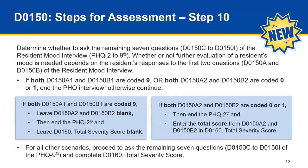A new step for assessment was added: Step 10. Step 10 states: determine whether to ask the remaining seven questions, D0150C through D0150I, of the resident mood interview PHQ 2-9. Whether or not further evaluation of a resident's mood is needed depends on the resident's responses to the first two questions, D0150A and D0150B. If both D0150A1 and D0150B1 are coded 9, or both D0150A2 and D0150B2 are coded as a 0 or a 1 in the PHQ interview, otherwise continue.